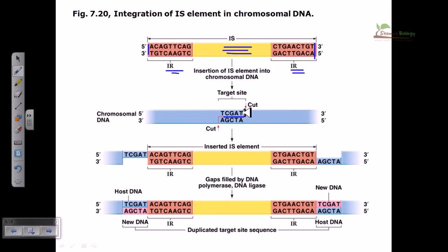It initiates a cut onto the target and attaches the IS element onto it. Right after the attachment, we can see there is a stretch of gaps at both terminal regions at the attachment site.